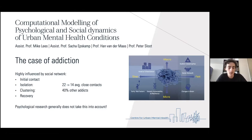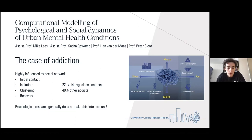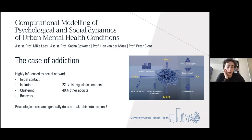I'm working on computational modeling of psychological and social dynamics of urban mental health conditions. In the beginning I will mainly be focusing on addiction, which is a good example of something normally looked at as a psychological thing but is very much influenced by your social network. Initial contacts with drugs almost always come from a friend. As addiction continues, your social network also changes — people have on average 22 good contacts, but addicts have around only 14 close contacts, and around 40 percent become other addicts.